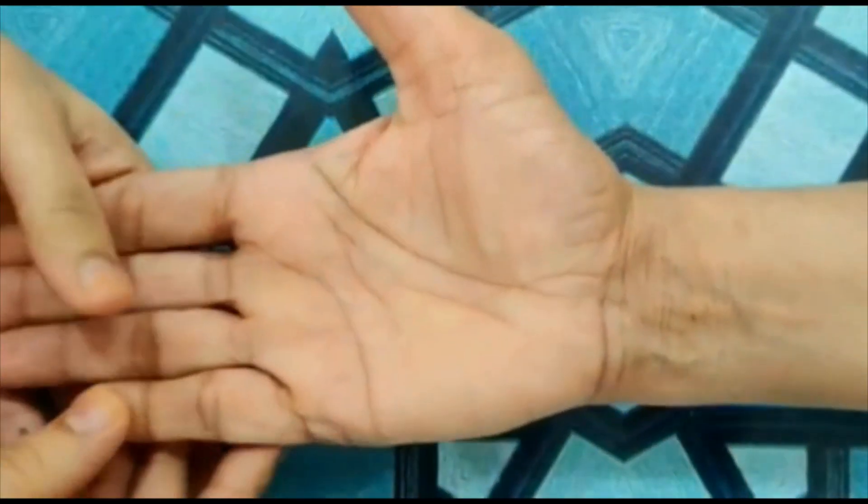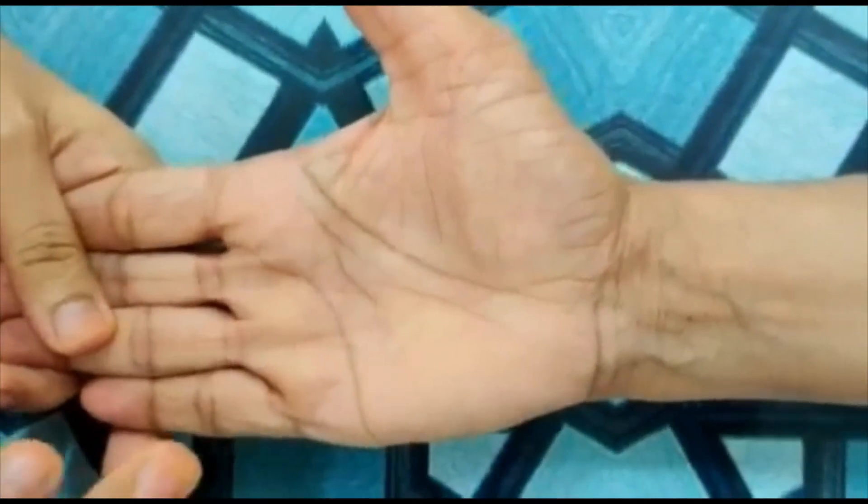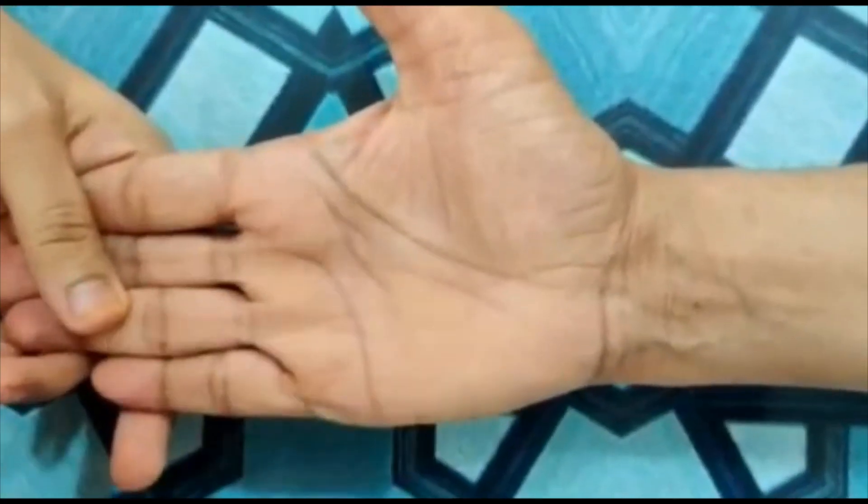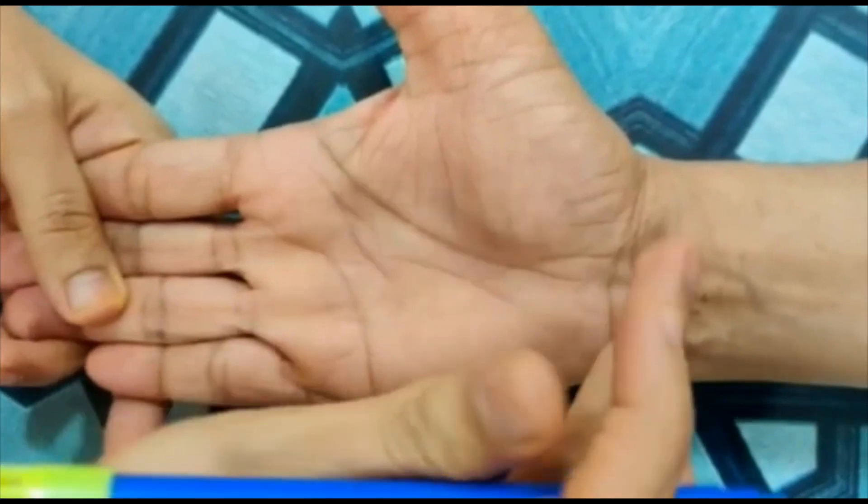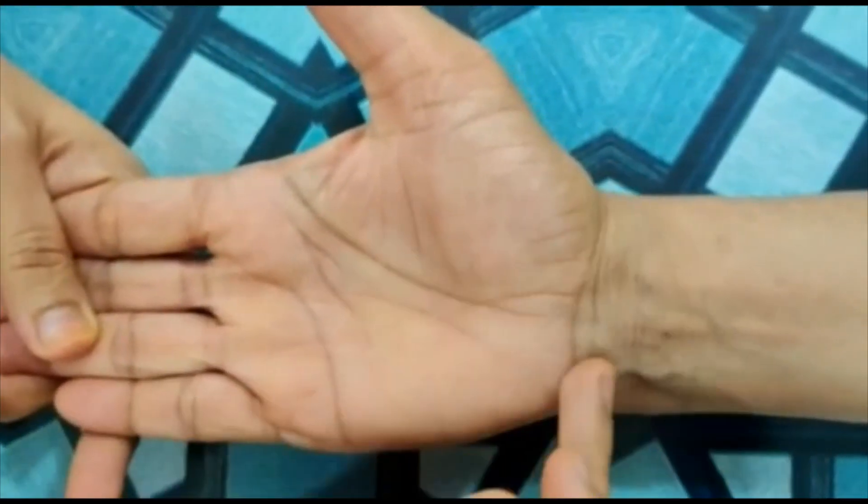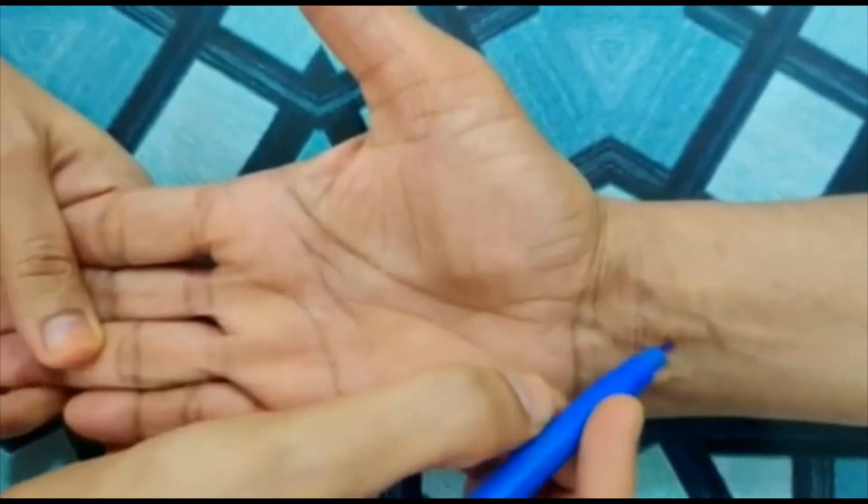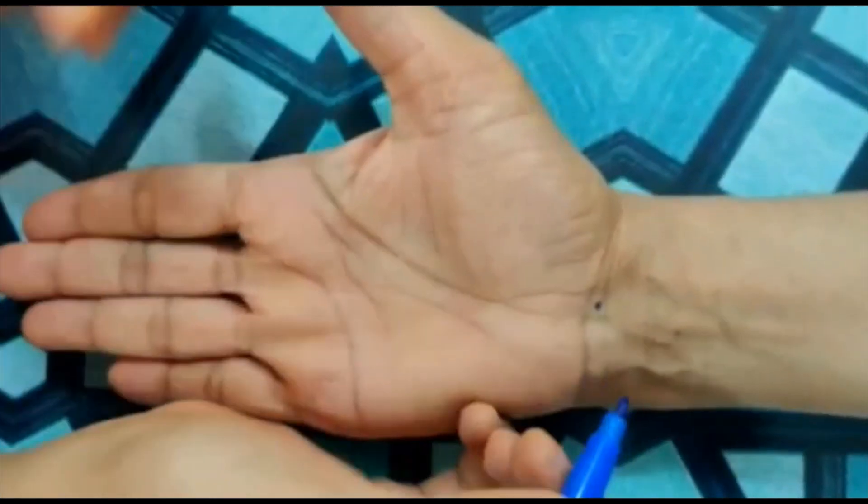So for gas, we have taken the patient's right hand. Keep in mind, only the right hand should be taken, this won't work on the left. So on the right hand, we need to take the center of the wrist. Look, I've marked the center.